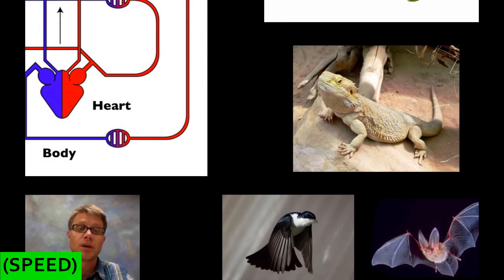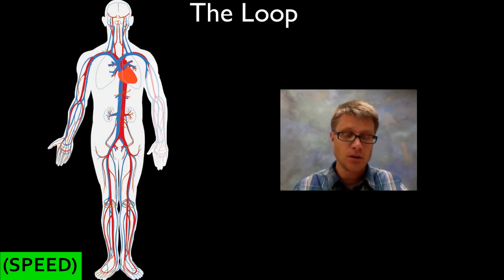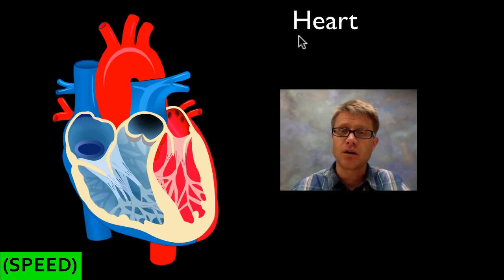Once we become endothermic — warm-blooded — we need quite a bit of energy, so mixing blood isn't efficient. That's why in birds and mammals we have a four-chambered heart. We've sealed up that third chamber so we now have four chambers and still a double loop, which is more efficient. Blood follows a loop starting at the heart, moving throughout the body in arteries, arterioles, and capillaries, then coming back — moving nutrients, carrying carbon dioxide out, and delivering oxygen.